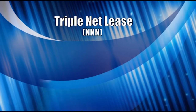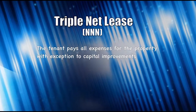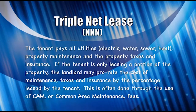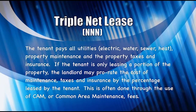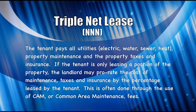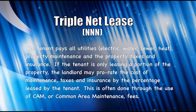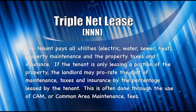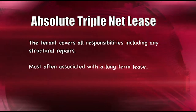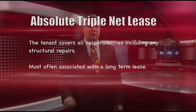Under a triple net (net-net-net) lease, the tenant pays all expenses except capital improvements, including all utilities, property maintenance, property taxes, and insurance. If the tenant leases only a portion of the property, the landlord may prorate costs by percentage leased, often using a CAM fee. The landlord is still typically responsible for structural repairs. Under an absolute triple net lease, the tenant is responsible for all costs including structural repairs — most often associated with very long-term leases.